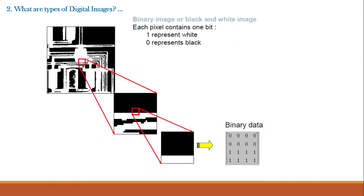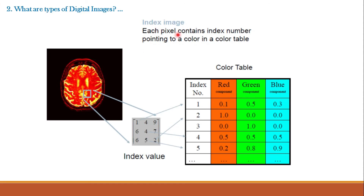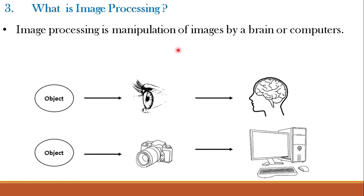A binary image or black-and-white image has each pixel containing only one bit, where 1 represents white and 0 represents black. The next type is an index image, where each pixel contains an index number pointing to a color in a color table — this is a type of encoding that is already done.